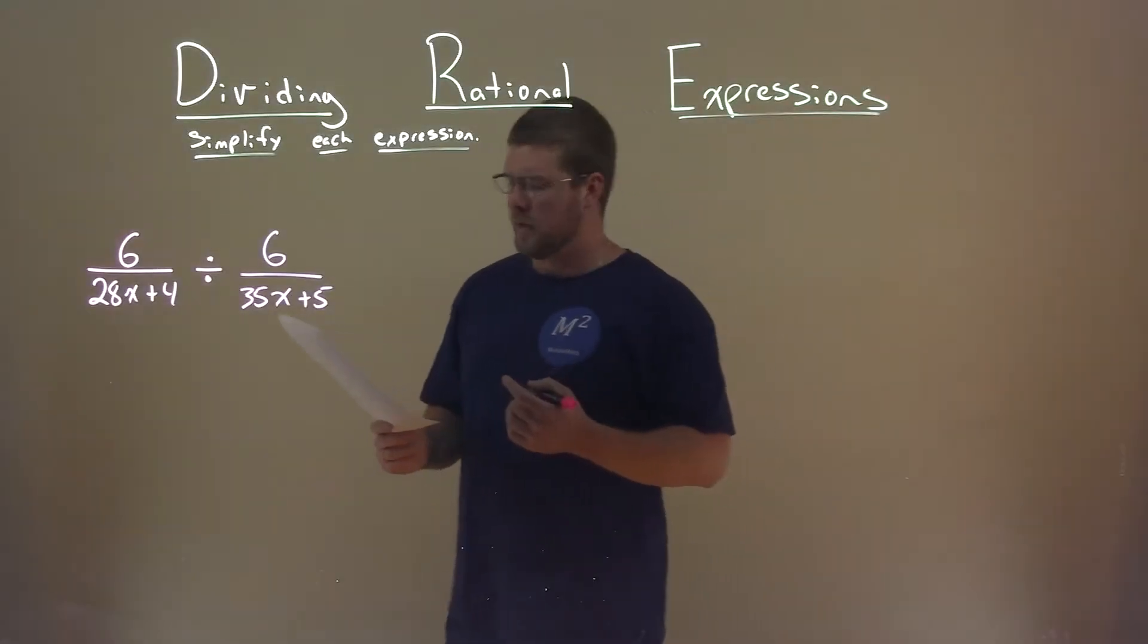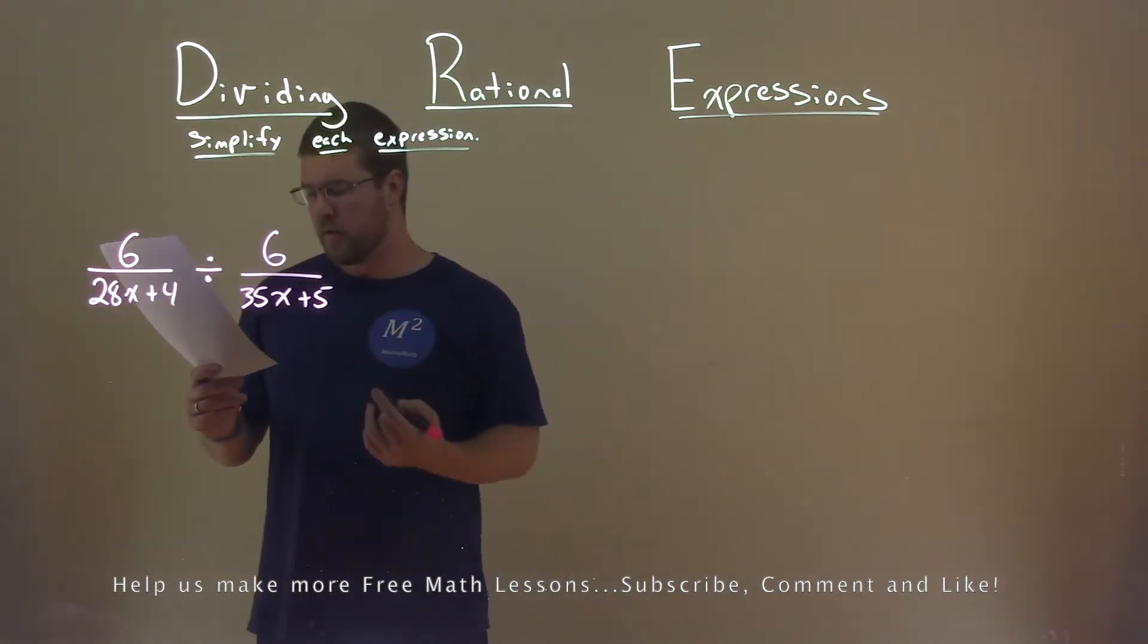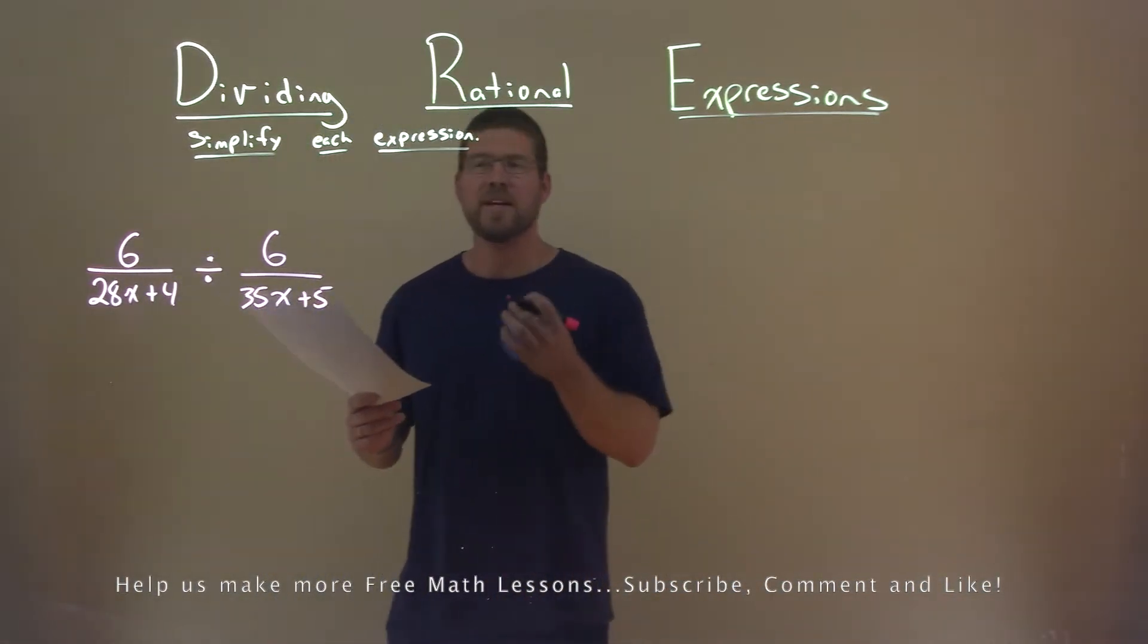We're given this problem right here: 6 divided by 28x plus 4, divided by 6 over 35x plus 5, and we need to simplify this expression.